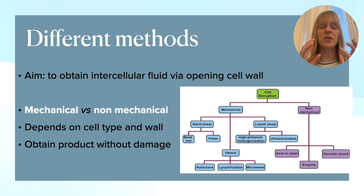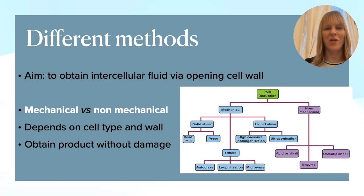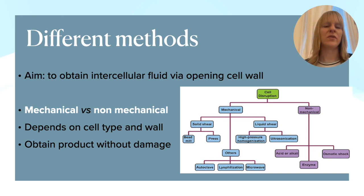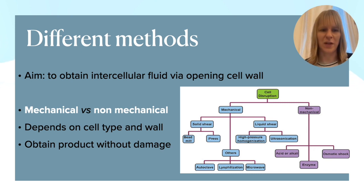In order to make your decision, you need to look at the cell type. For instance, the cell wall for plants is very different than when you have the absence of cell walls in animal cells. You also need to consider whether the cells can withstand high shear stress — these are all things you need to think about.